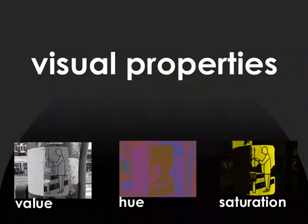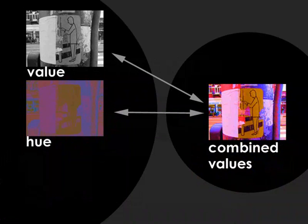So here's our three visual properties: Value, hue, and saturation. And by combining them, we get an image.